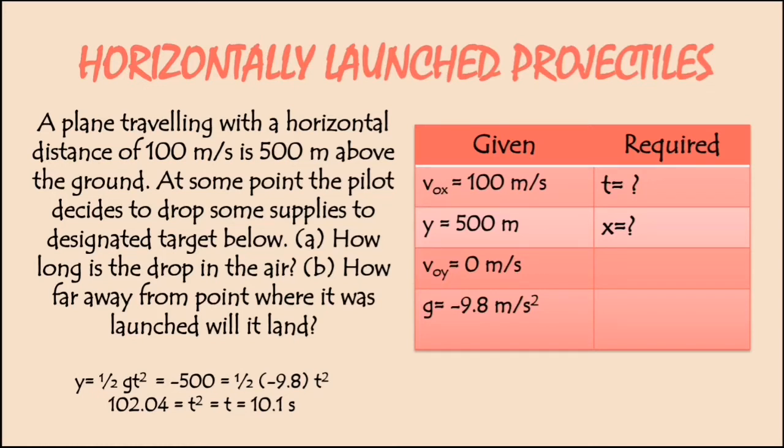After substituting the value into that equation, we're going to multiply 0.5 or 1/2 into the value of the acceleration due to gravity, which is negative 9.8, and we would have a value of negative 4.9. Right after that, we are going to divide 500 into negative 4.9. Negative 500 divided by negative 4.9 would equal 102.04. After getting that value, we're going to get the value of time by taking the square root of 102.04 to cancel out that square. The value would be 10.1 seconds.